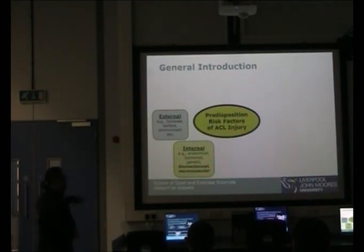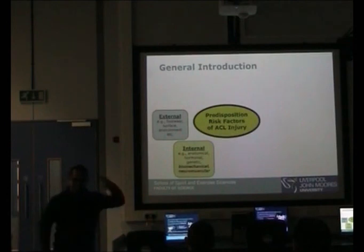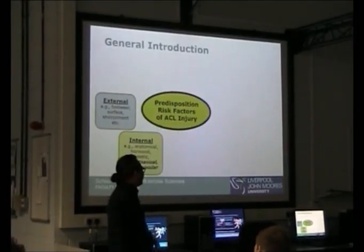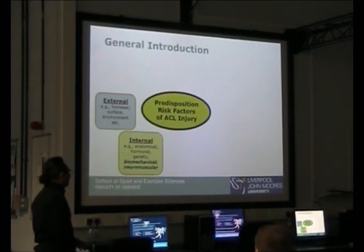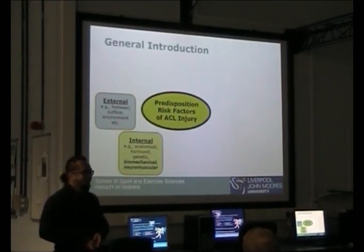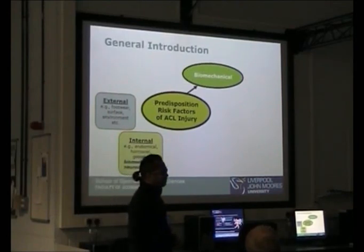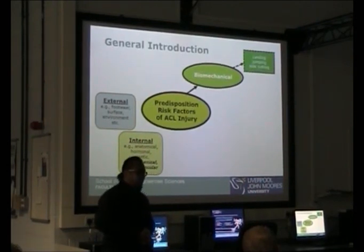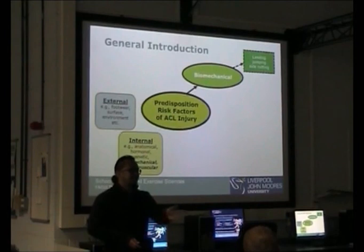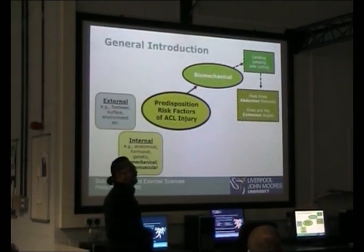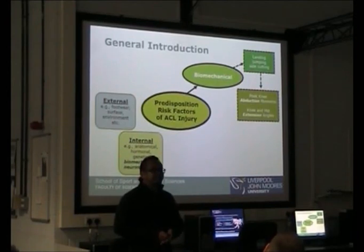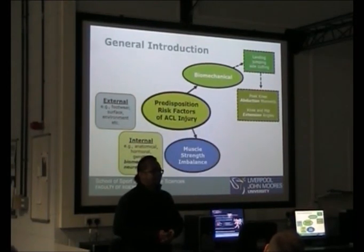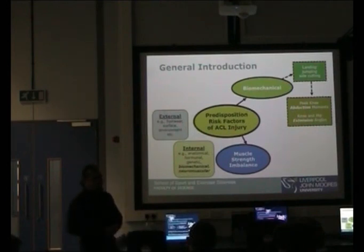Within the internal risk factors, the biomechanical and neuromuscular can be modified — sometimes I wish the anatomical could be modified too so I could become a little bit taller. This biomechanical neuromuscular aspect would be the main focus of my studies. For biomechanical risk factors, most injuries are likely to occur during improper mechanics such as landing, jumping, or changing direction such as performing side cutting tasks. These movements are likely to induce greater changes in peak knee abduction moment and more extended knee and hip angles, which are likely to contribute to ACL injury.